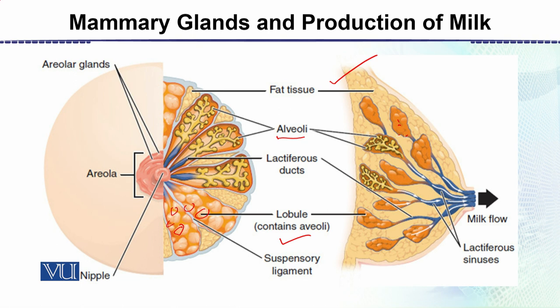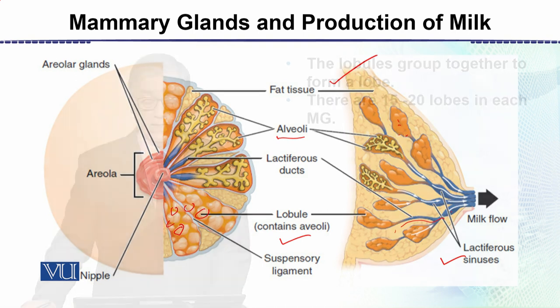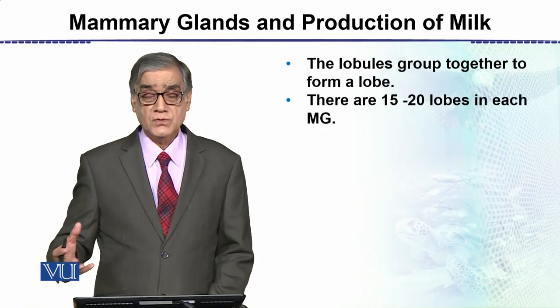The lobules form the milk. After that, the lactiferous ducts carry the milk, and very close to the outside near the nipple there are the lactiferous sinuses, where milk is temporarily collected. It then comes out of the nipple by the suckling of the child.